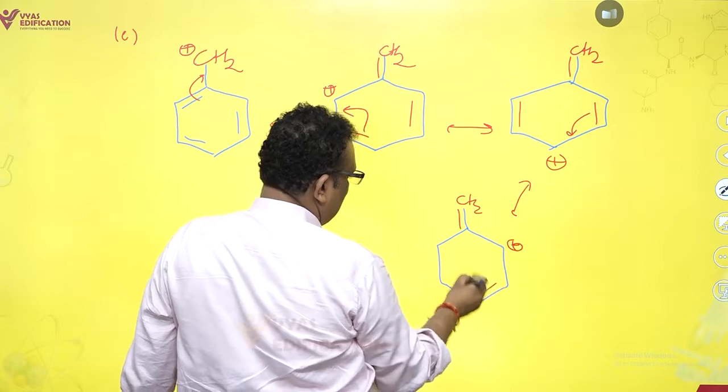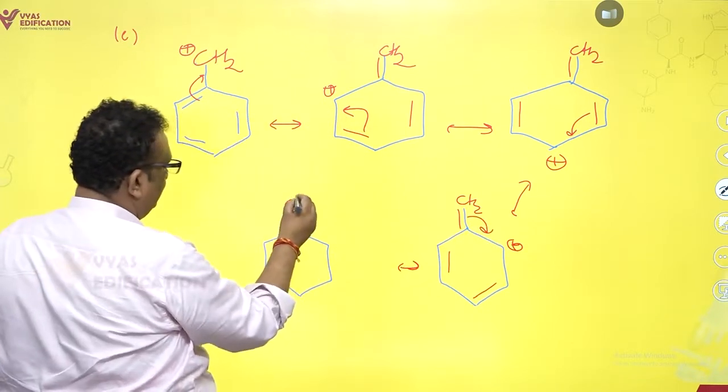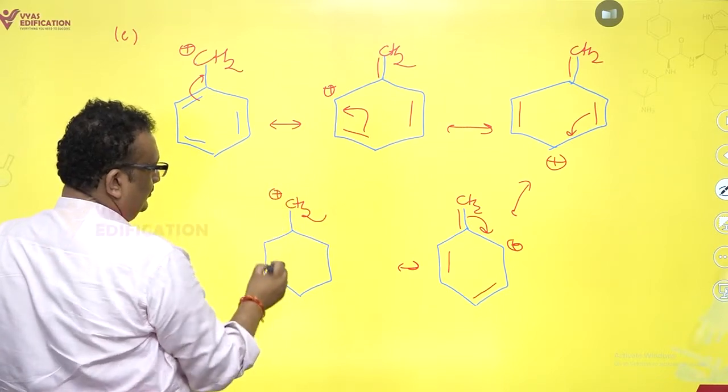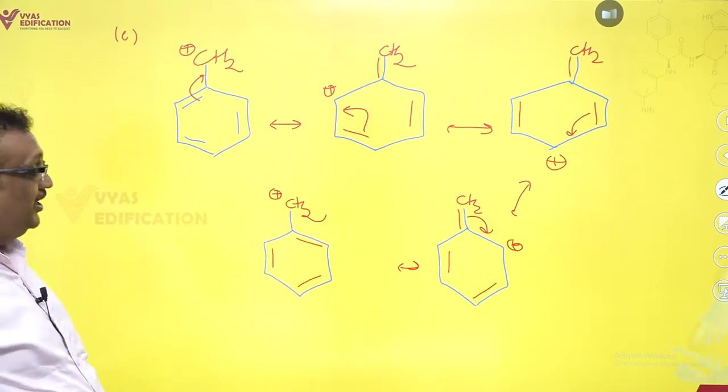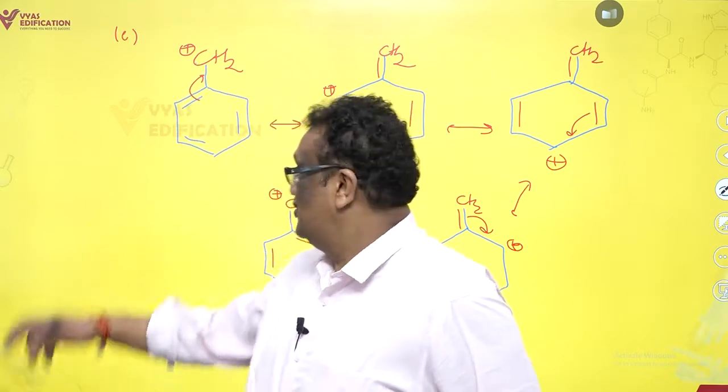It is, and it just keeps on and on. The fun never stops, literally. And this is all what we get. We get five structures for benzyl cation like this: one, two, three, four, five.